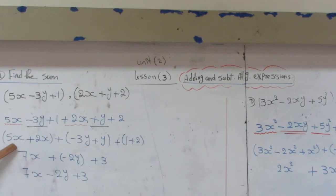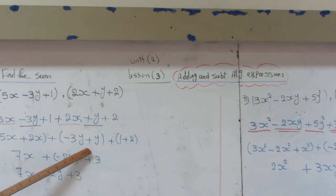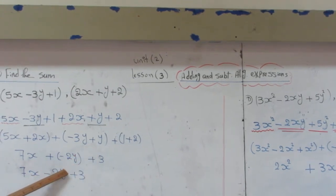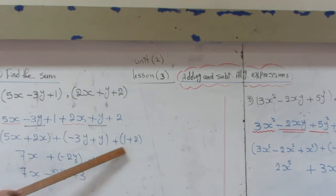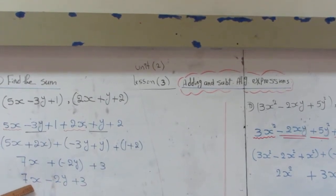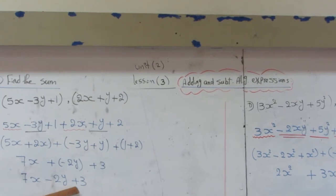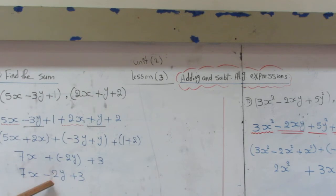Then collect. 5X plus 2X will be 7X. Negative 3Y plus Y will be negative 2Y. And 1 plus 2 will be 3. Then it will be 7X minus 2Y plus 3. I have here positive and negative will be negative.